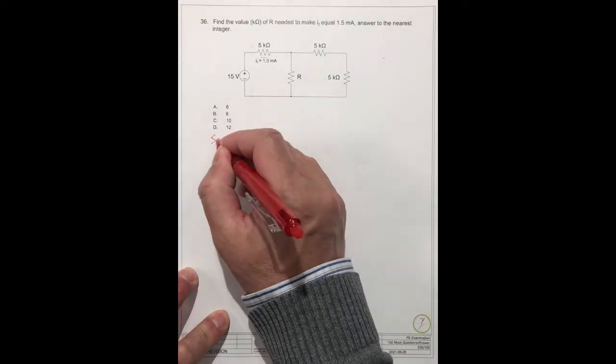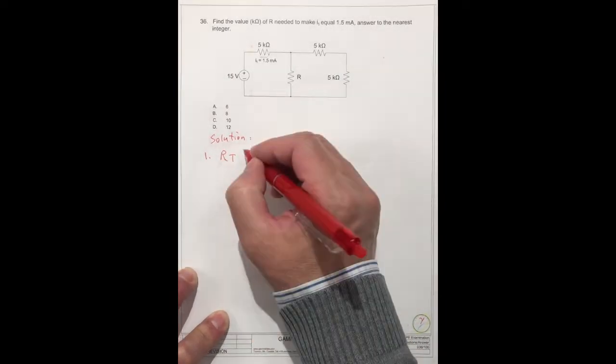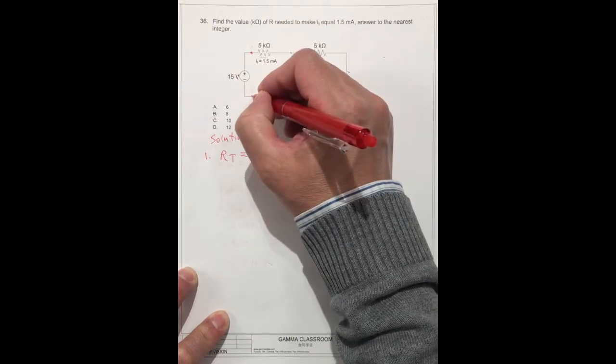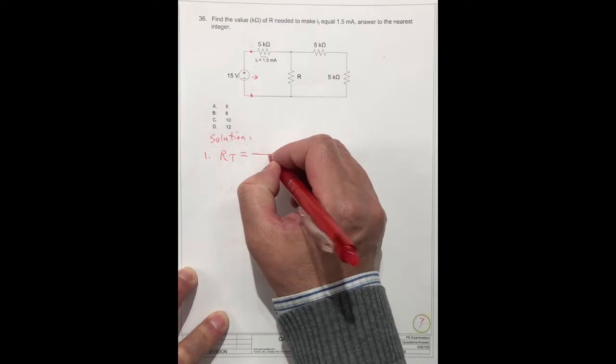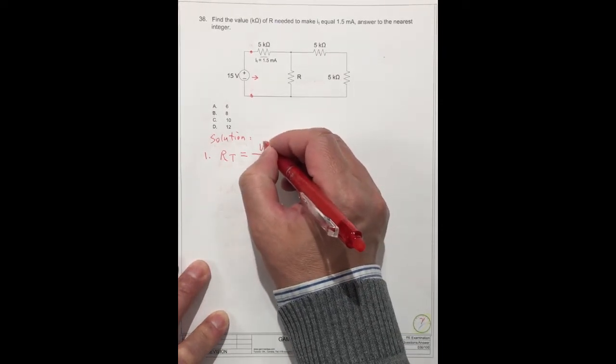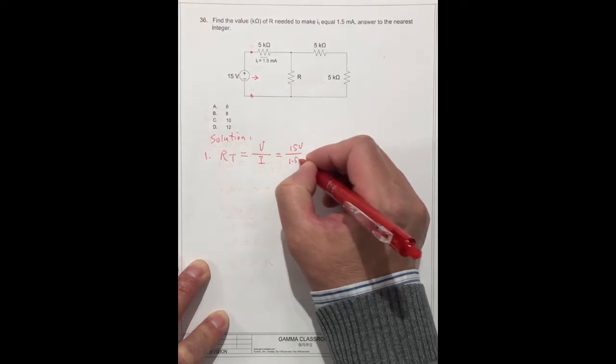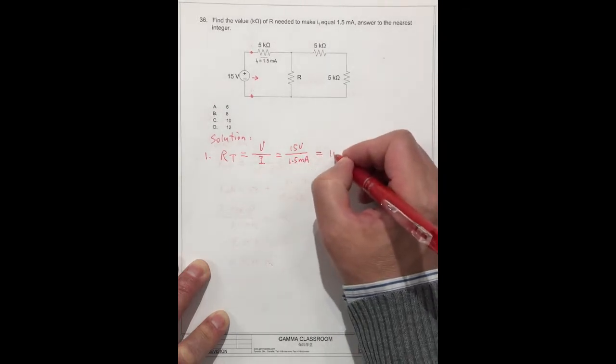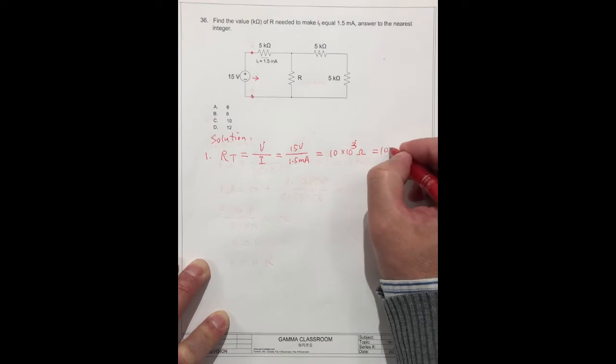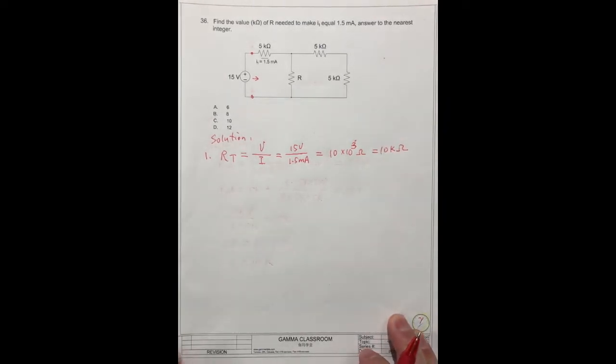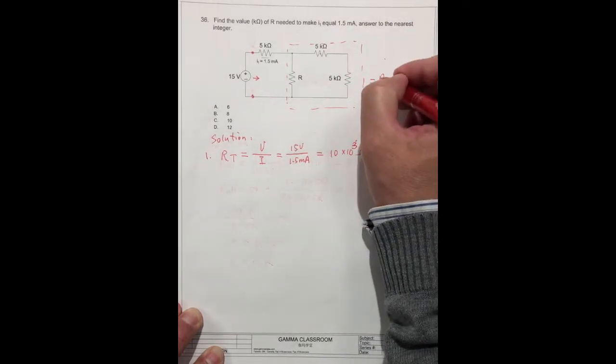So for the solution. The first one, we need to get the total resistor from these two points. Look at this way. Because we know the voltage, we know the current. So the total resistor should be V divided by I, should be equal to 15 V divided by 1.5 mA, is equal to 10 times 10³ ohms, is equal to 10 kilo-ohms. So we know this, we know this. We can think this part is equal to R equivalent.